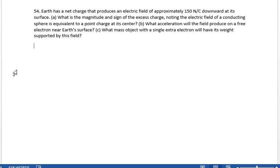All right, chapter 18, problem 54. The Earth has a net charge that produces an electric field of approximately 150 newtons per coulomb downward.